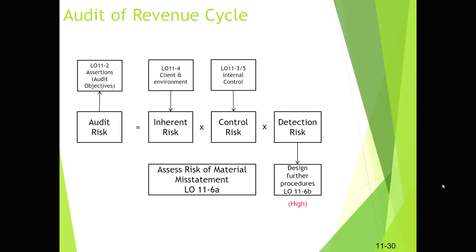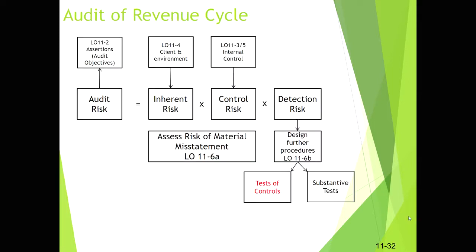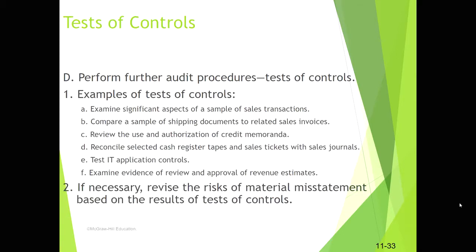Moving through the audit risk model: after doing the risk assessment, thinking about material misstatements, and setting up inherent and control risk, I already have my set audit risk. I can then calculate my allowable detection risk and start designing further procedures, which include control testing and substantive testing.